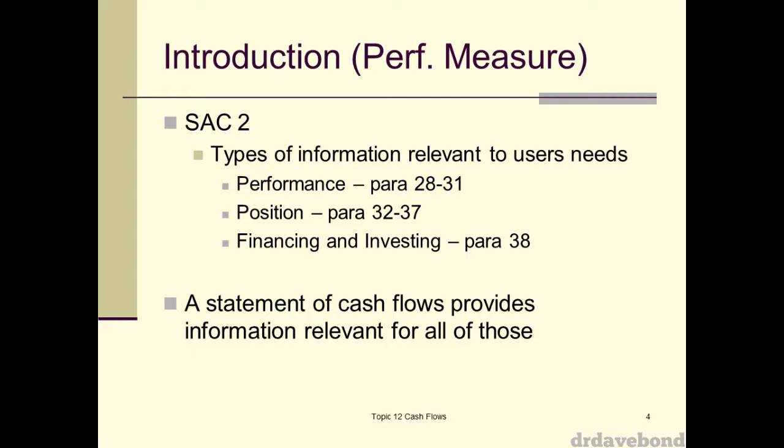Statement of Accounting Concept 2 looks at the types of information users need to be able to make decisions: performance information, positional information, and financing and investing information. A statement of cash flows includes all of that. In terms of operating cash flows — how the business actually runs — does it make cash? If you're burning through cash, that's not sustainable in the longer term. Depending on the life cycle of the business, you can have a negative cash flow from operations.